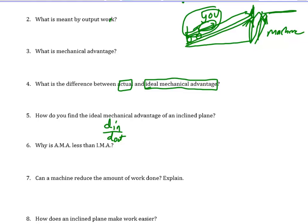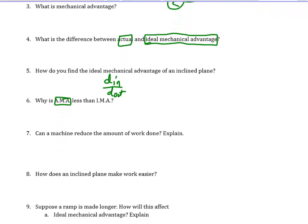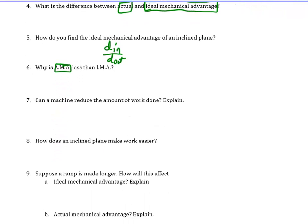Actual mechanical advantage is always going to be less than ideal mechanical advantage. The reason is that you push this way and friction pushes against you, and actual mechanical advantage includes that. So you have to include friction with actual mechanical advantage, not with ideal.